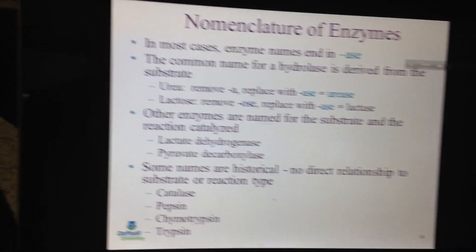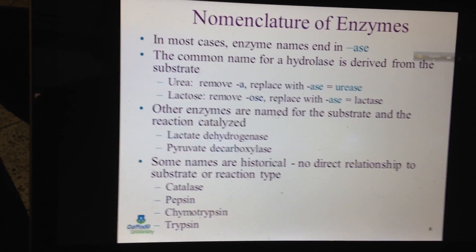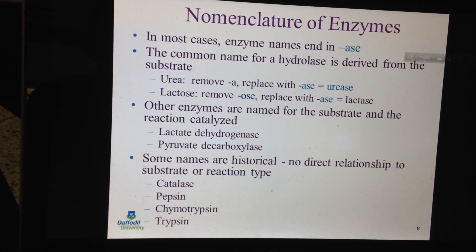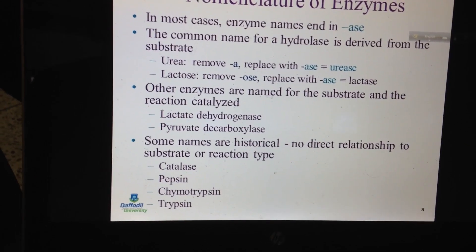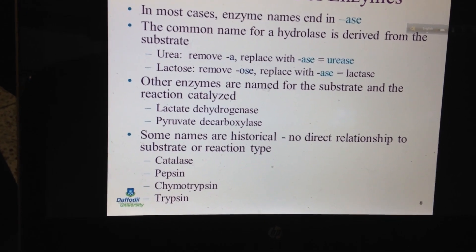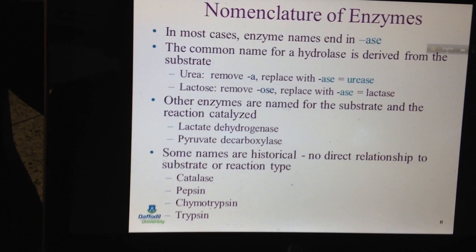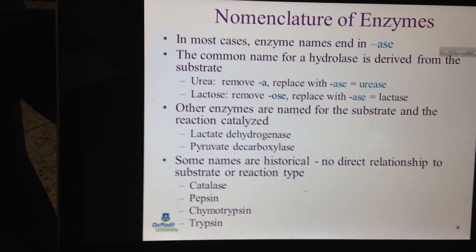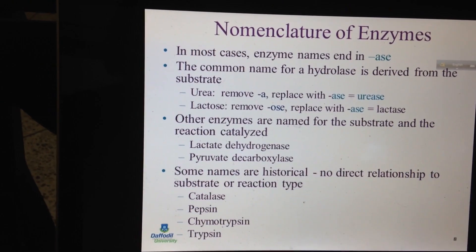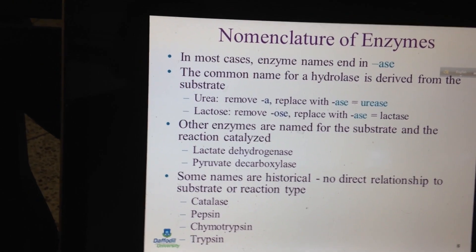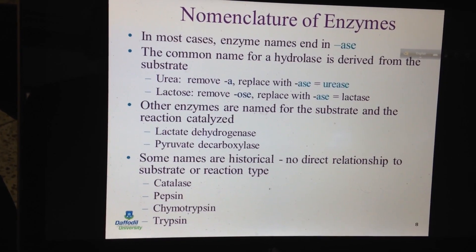The nomenclature of enzymes basically starts with '-ase'. For example, if an enzyme is active on urea, it is called urease; if active on lactose, it is lactase; if active on cellulose, it is cellulase. Another format of nomenclature is based on the type of reaction catalyzed: oxidation gives oxidase, reduction gives reductase, hydrolysis gives hydrolase, and removal of hydrogen gives dehydrogenase.